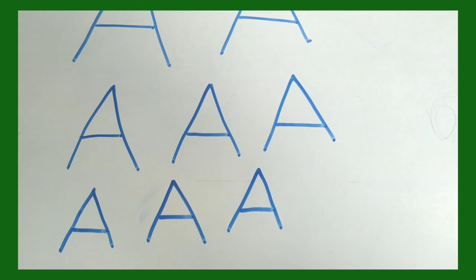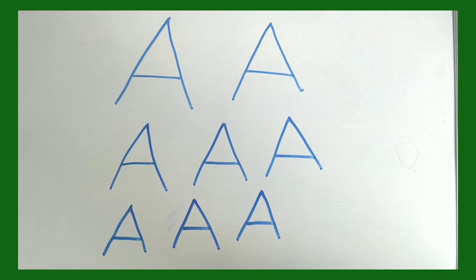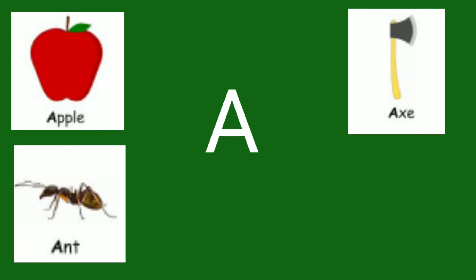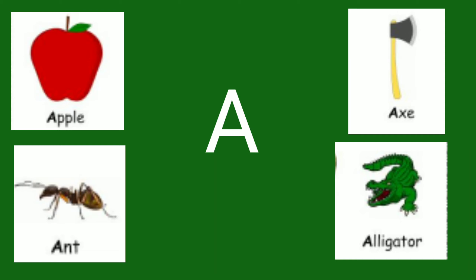Now children, we will see what are the things that begin with letter A. A for Apple — see the red apple. A for Apple. Now let's see the next picture. A for Ant. Say the word, children — A for Ant. Now the next one: A for Alligator. Yes, say the word — A for Alligator.